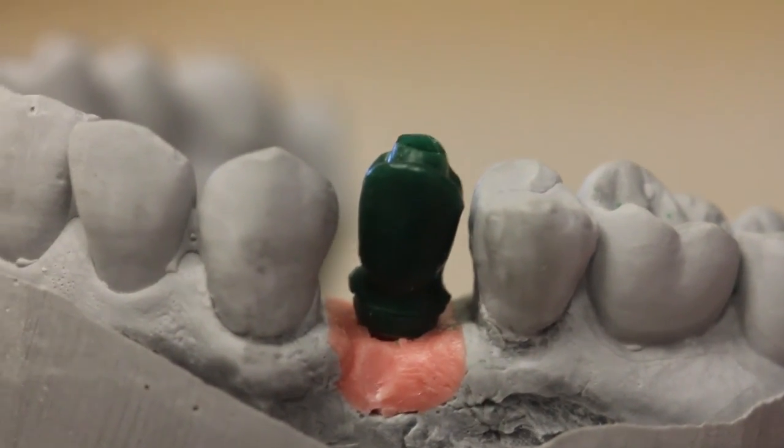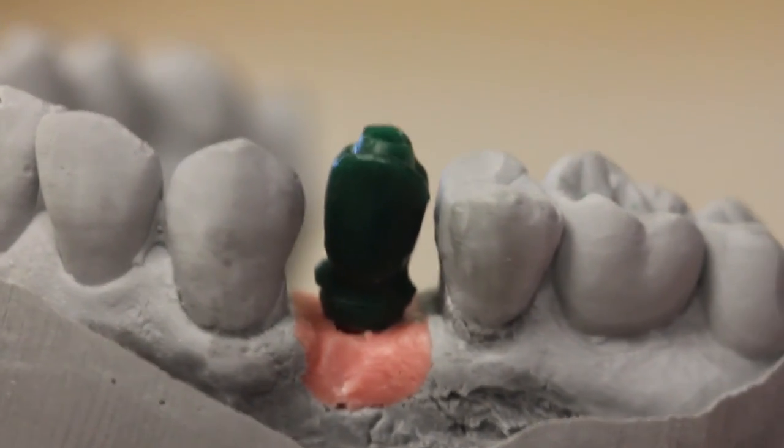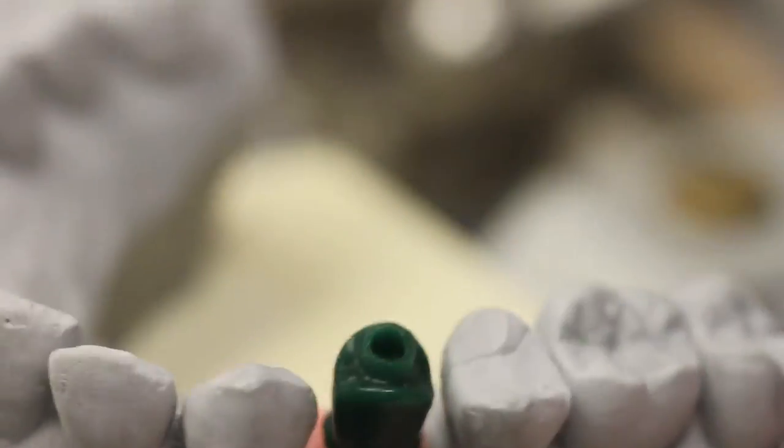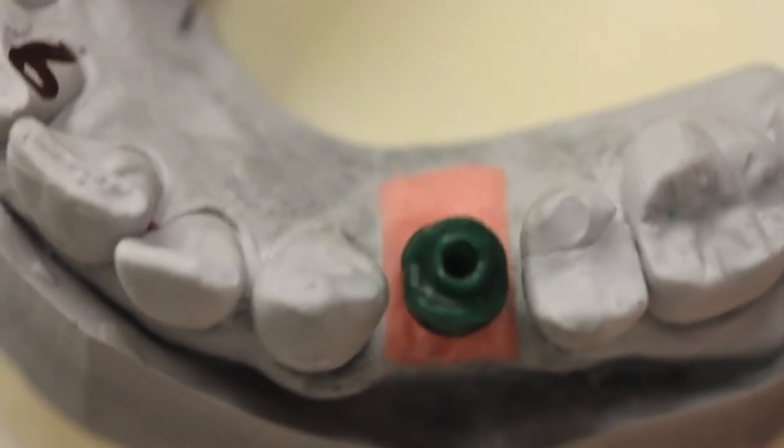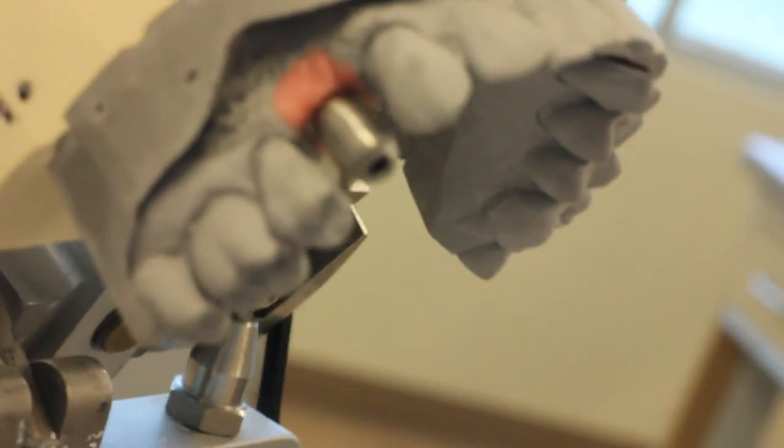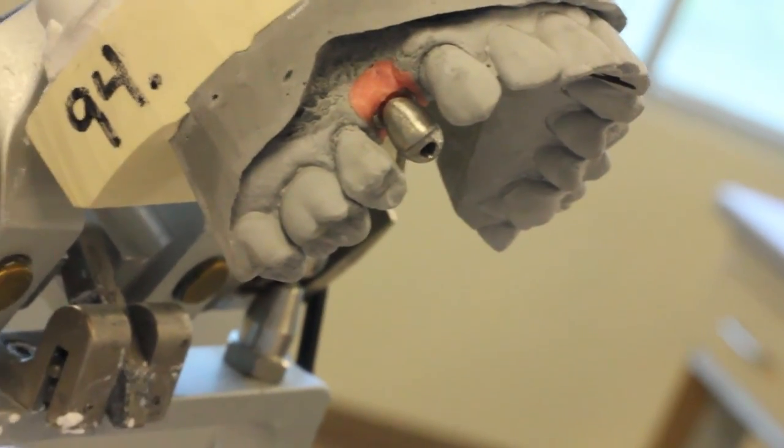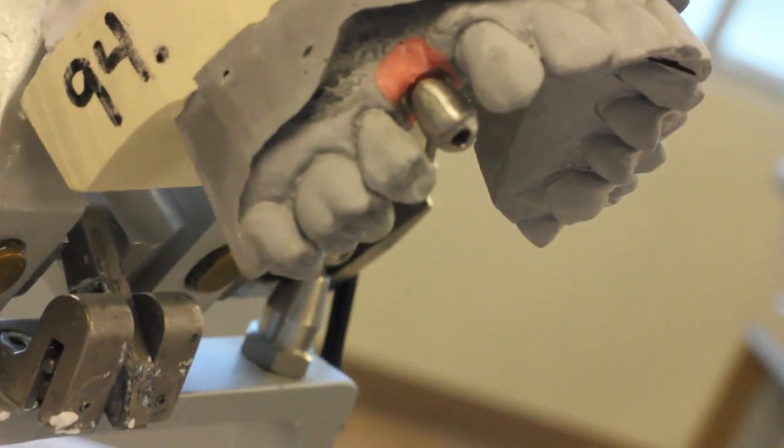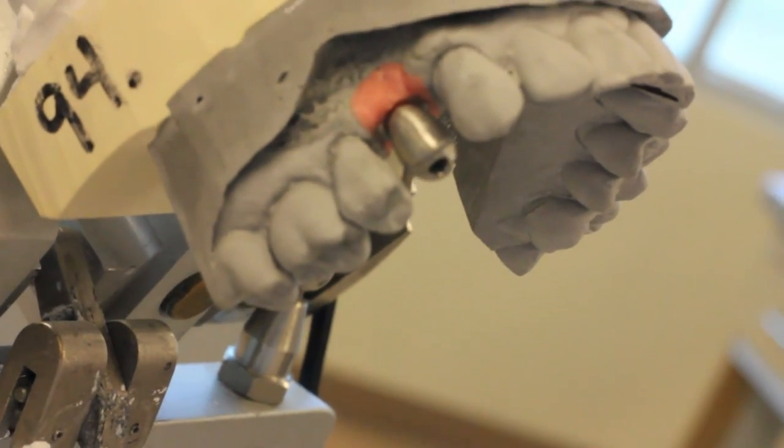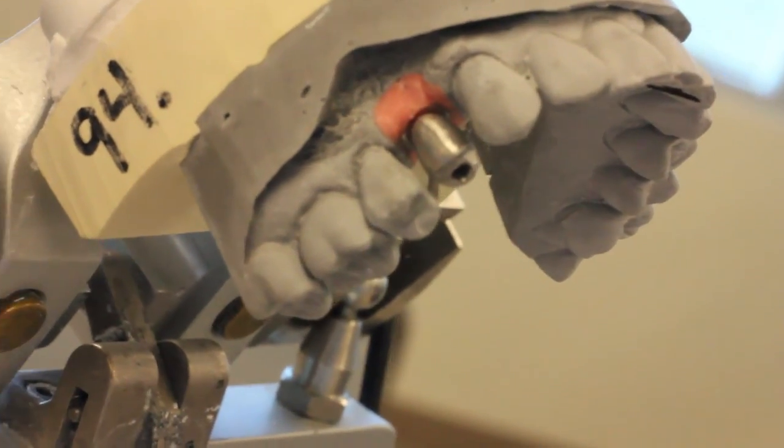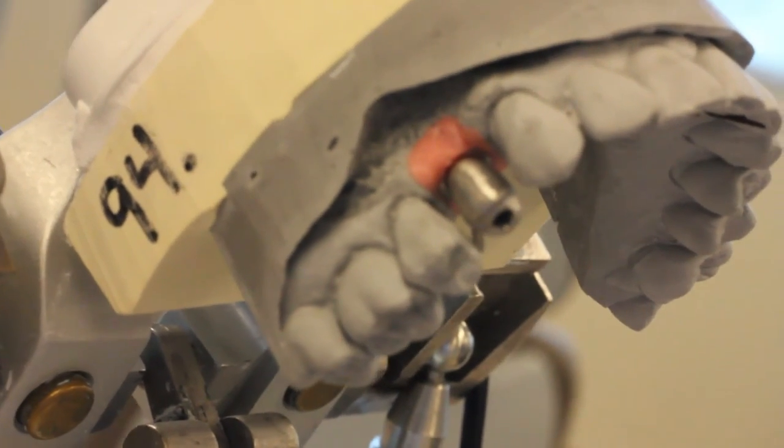They'll be able to wax up to the shape of the crown with a cutback. Then this wax pattern gets casted into metal. Once it's casted into metal, porcelain will be stacked onto it to get us a PFM. In this case, it's a screw-retained porcelain-fused metal crown.